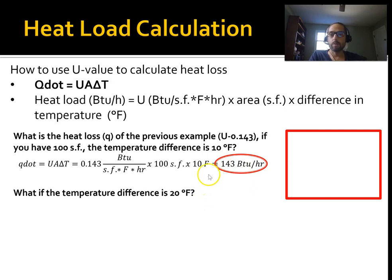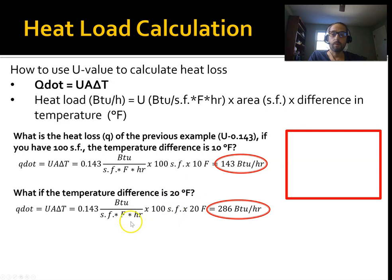Same surface, but now the delta T is 20. What is my heat load under those circumstances? Same formula, but 0.143 times 100 square feet, but this time it's times 20. So our heat loss is 286. So it's twice that. You notice we double the delta T, and we double the heat loss.